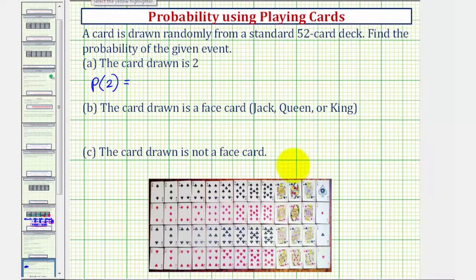Looking at our deck, here are the 2s. There's one 2 of each suit, for a total of 4 twos.